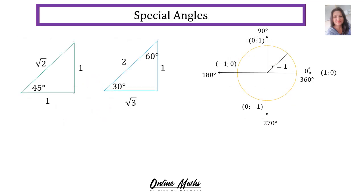There are also special angles. In the first triangle we have 45 degrees; in the second triangle, 30 and 60 degrees. On the Cartesian plane, the special angles are 0°, 90°, 180°, 270°, and 360°.